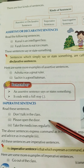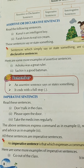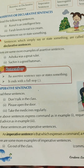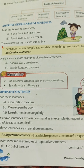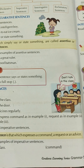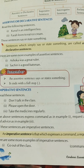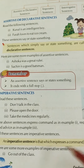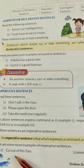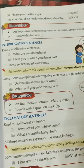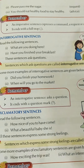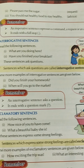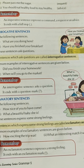Next are imperative sentences. For example: 'Don't talk in the class,' 'Please open the door,' 'Take the medicines regularly.' In all these sentences, a command, request, or advice is being given. An imperative sentence expresses a command, a request, or an advice. More examples: 'Go out of the class' — that's a command; 'Please pass me the sugar' — that's a request; 'You should eat healthy food to stay healthy' — that's an advice. Imperative sentences end with a full stop.